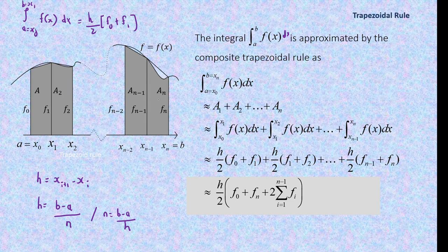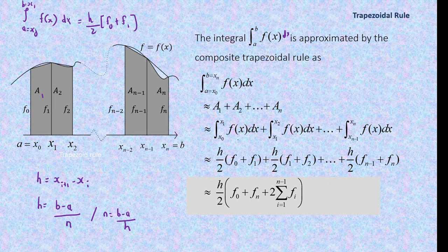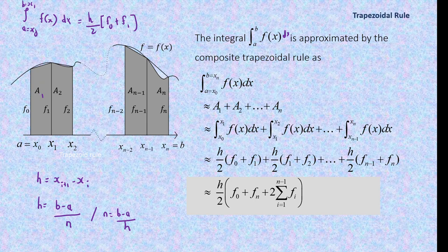The integral of f(x) dx from x₀ to xₙ can be approximated as A₁ + A₂ + ... + Aₙ. Applying the trapezoid formula to each segment: from x₀ to x₁ gives h/2 × [f(x₀) + f(x₁)], from x₁ to x₂ gives h/2 × [f(x₁) + f(x₂)], and the last segment gives h/2 × [f(xₙ₋₁) + f(xₙ)].